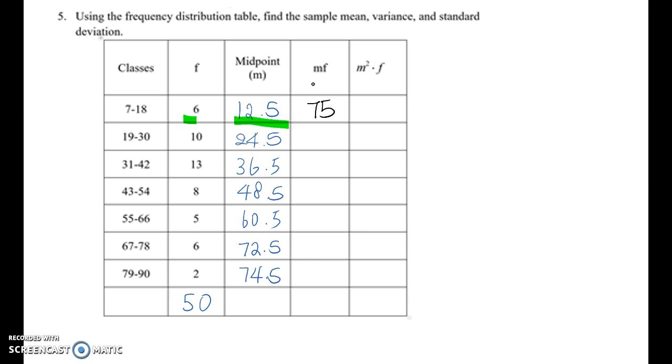Please pause this video and calculate all other m times f values and then get back to this video. If you calculate that, you will earn those values and total becomes 2069. Therefore, using these two columns, you can find the mean value.